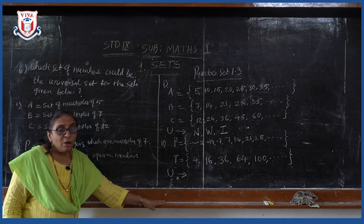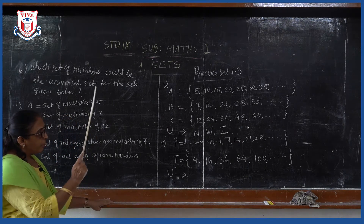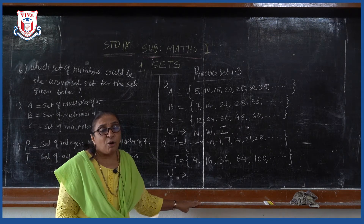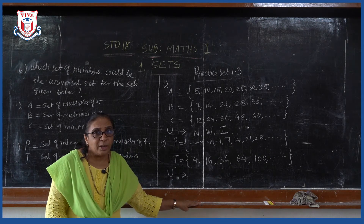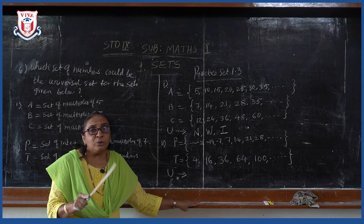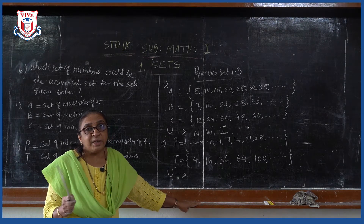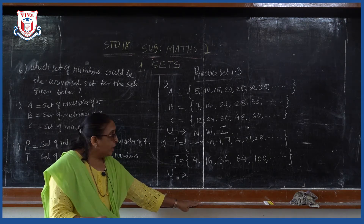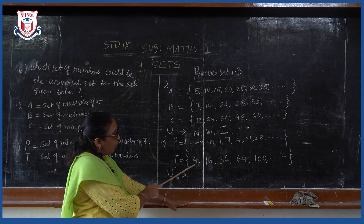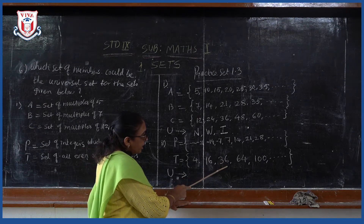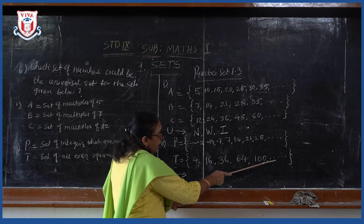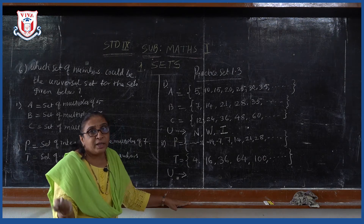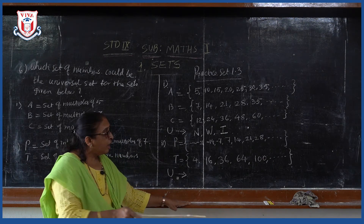T is a set of even square numbers. You know that the square of an even number is even and the square of an odd number is odd. For example, 1 squared is 1, 2 squared is 4, 3 squared is 9, 4 squared is 16. So even square numbers are 4, 16, 36, 64, 100 and so on — these are squares of 2, 4, 6, 8, 10, 12, 14, 16, 18, 20.